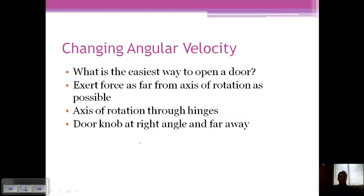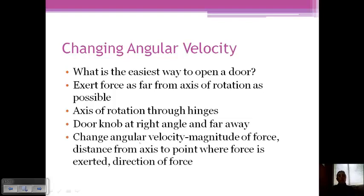And so your doorknob is at a right angle and as far away from that axis of rotation as possible. And so if you want to change angular velocity, you need to control the magnitude of the force, so how hard you're pulling on the doorknob. The distance from the axis to the point where the force is exerted, so that would be like from the hinges to the doorknob, and then the direction of the force as well.